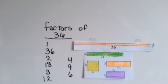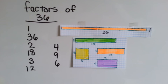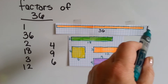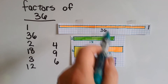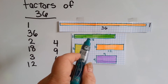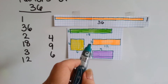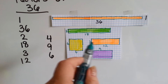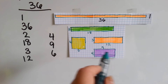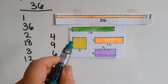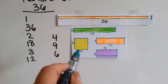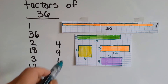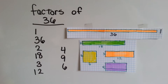What if we wanted to find the factors of 36? That one has quite a few factors. We could do 1 times 36. We could do 2 times 18 — 2 rows of 18. We could do 3 rows of 12, that's 36. We could do 4 rows of 9 — 4 times 9 is 36. And we could do 6 rows of 6, because 6 times 6 is 36. So all of these numbers are factors of 36.